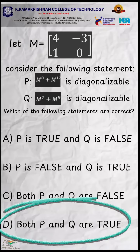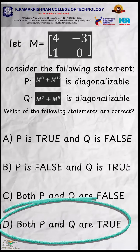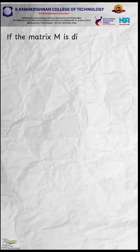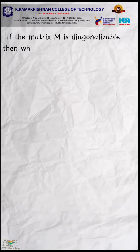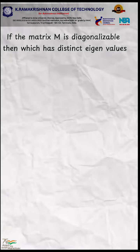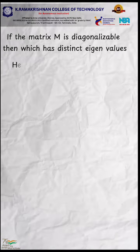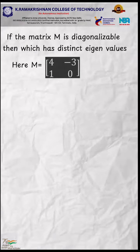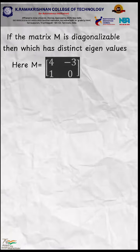Both P and Q are true. Explanation: if the matrix M is diagonalizable, then it has distinct eigenvalues. Here M is equal to the matrix [4, 1; -3, 0].